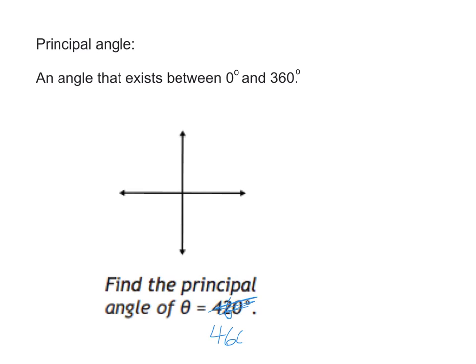So find the principal angle of 460 degrees. Where would you find 460 degrees? Which quadrant? Quadrant 2. Yeah. So it would be kind of around there, right? Because 460 is all the way around to 360 and then another 100.